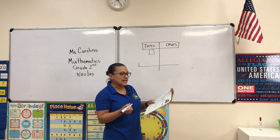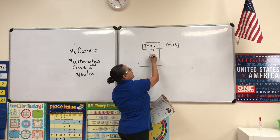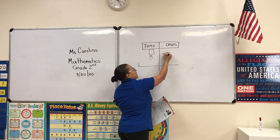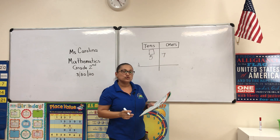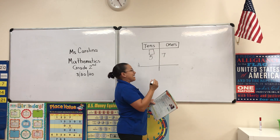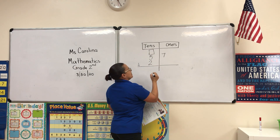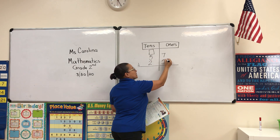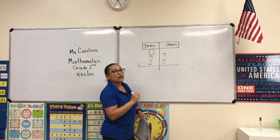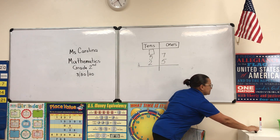The first thing we do is write the numbers where they belong. For 57, the 5 goes into the tens and the 7 goes into the ones. For 25, the 2 goes into the tens and the 5 goes into the ones. Now we are ready to add.